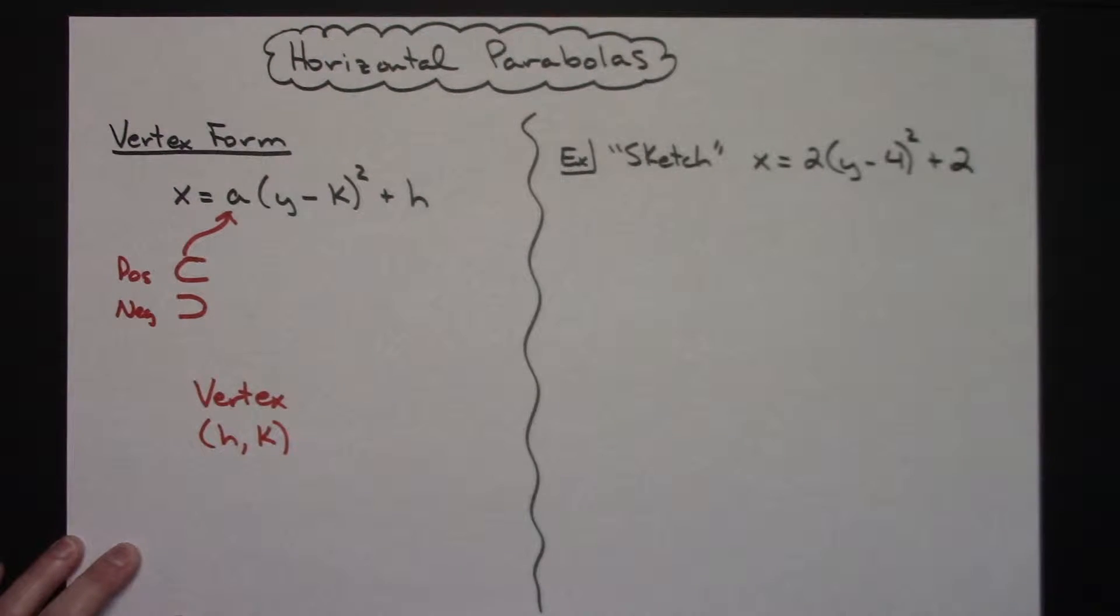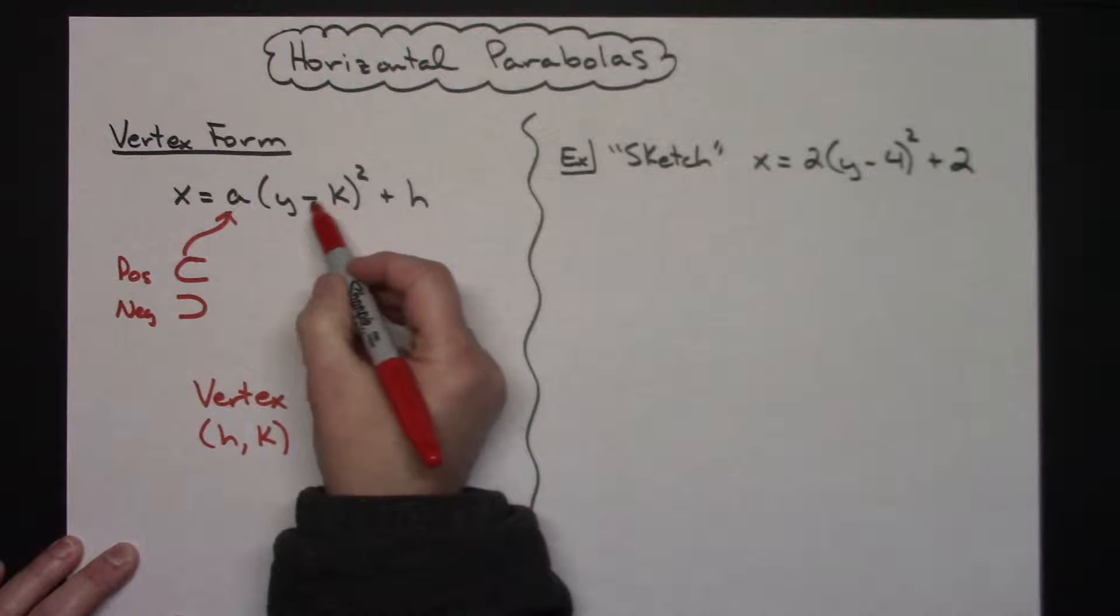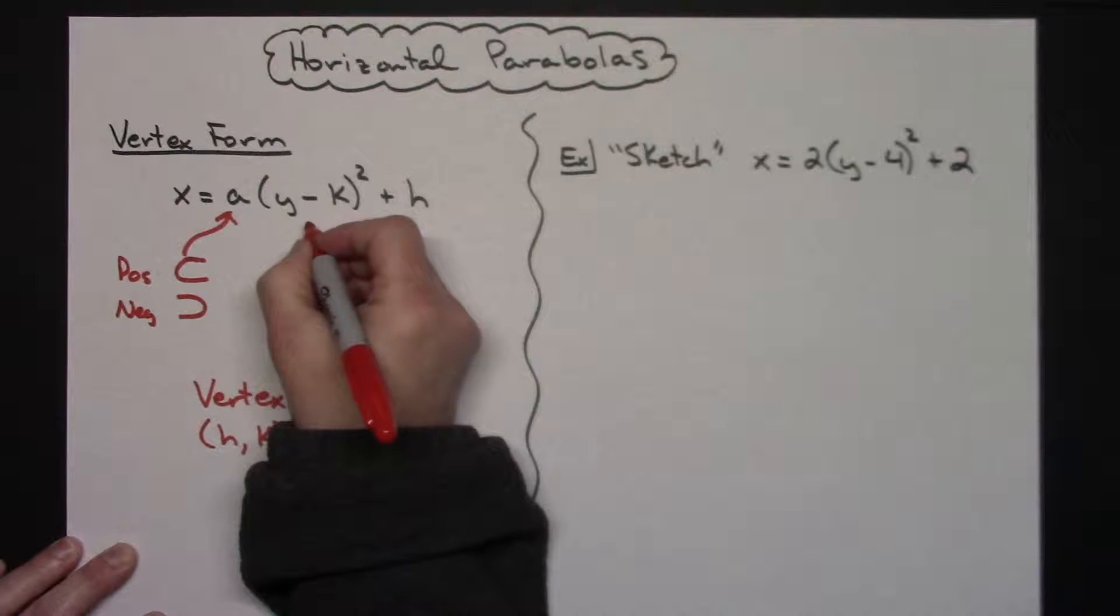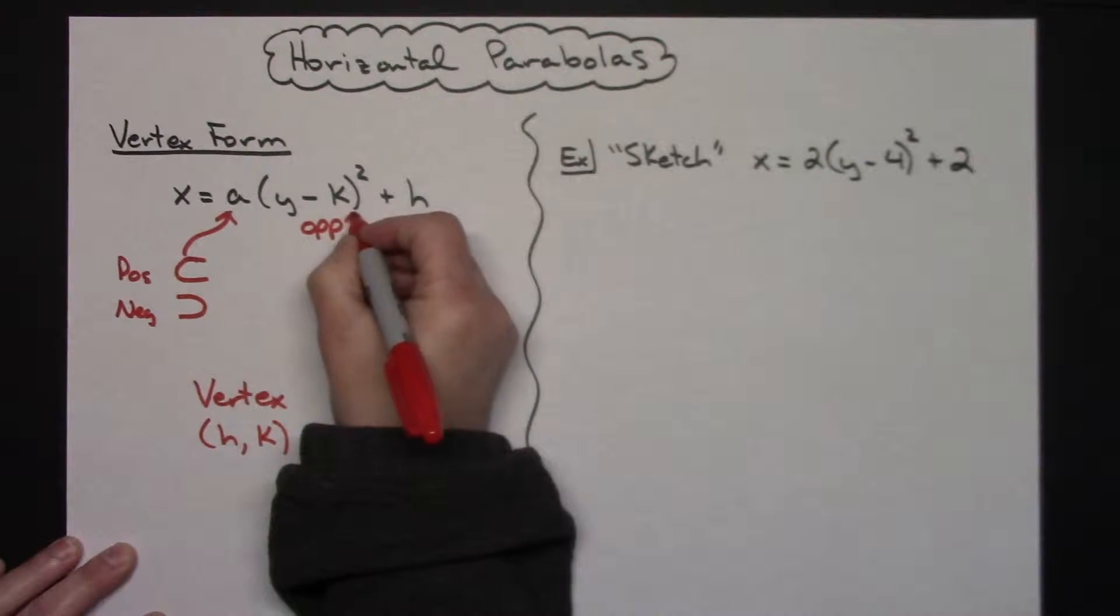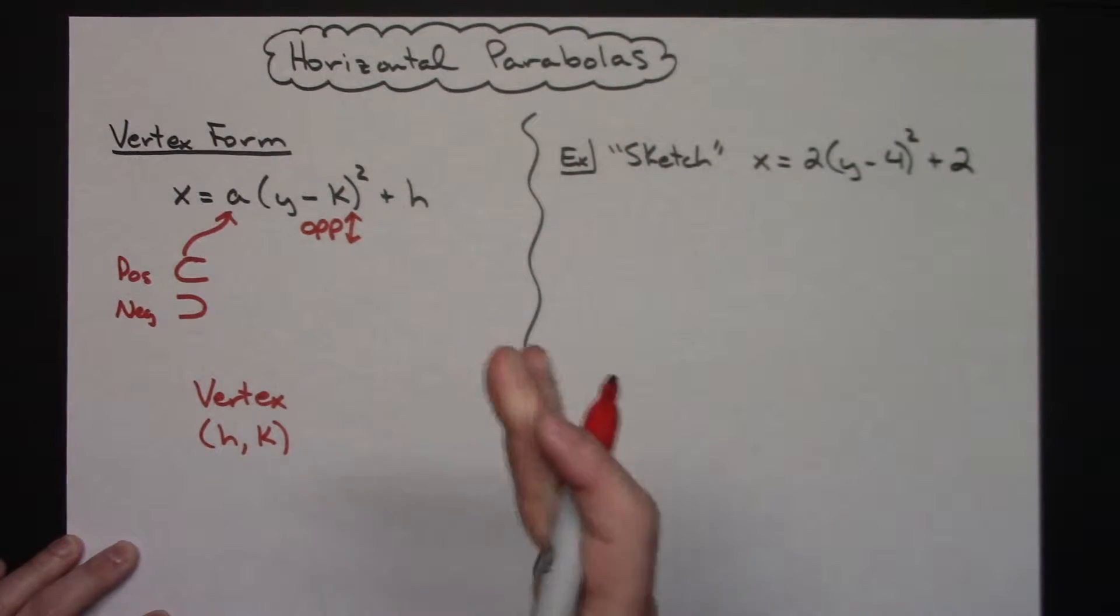So what you're going to have to remember is that in this case, since the k is on the inside, and the k is still my y value in my vertex, it's going to tell me how to shift my vertex opposite up or down, because it's the y value and along the y axis, we shift up or down.